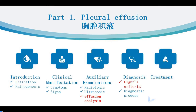There are two diseases in this chapter. The first one is pleural effusion, called 胸膜疾病 in Chinese. In this class, we will learn about the introduction, clinical manifestation, auxiliary examinations, diagnosis, and treatment for pleural effusion. At the end of this class, I will tell you some brief information about pneumothorax.